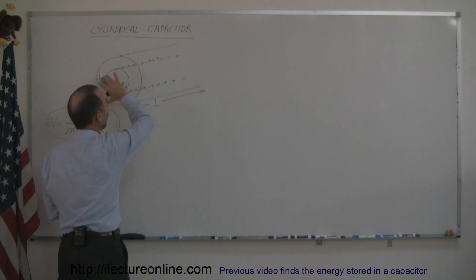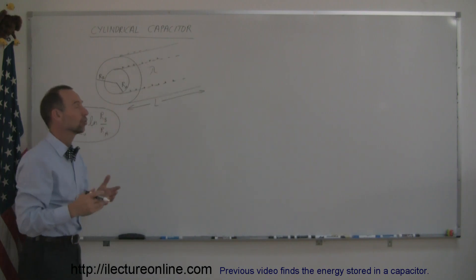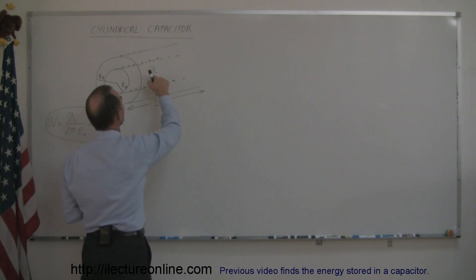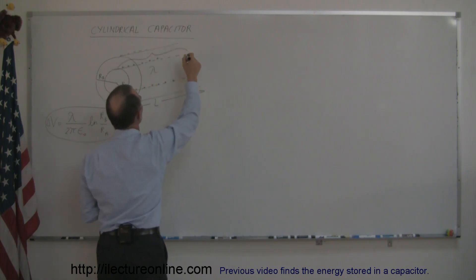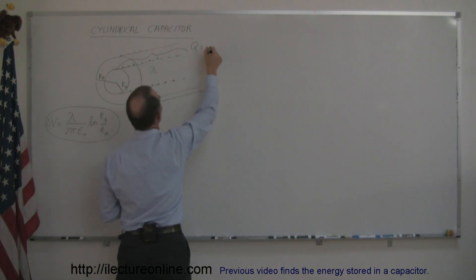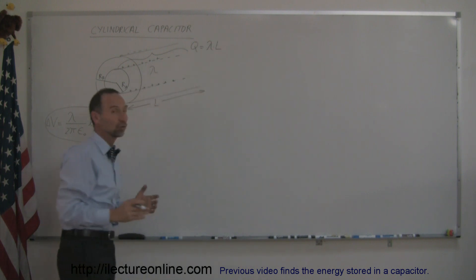Again, also assuming that the charge on there is the linear charge density, so lambda would be in terms of charge per unit length, and so then the total charge on a segment of this capacitor, Q, can be defined as the charge per unit length times the length of that segment if we then assume that L is a certain segment.